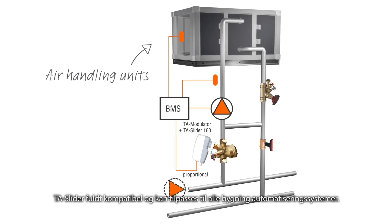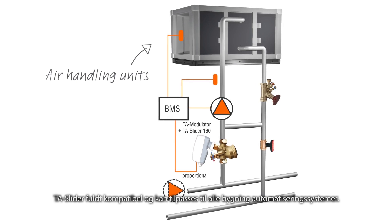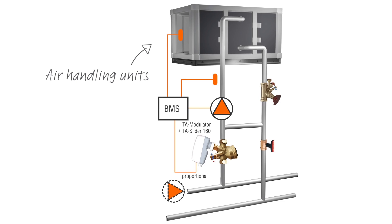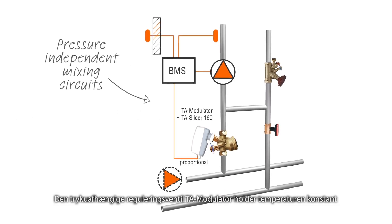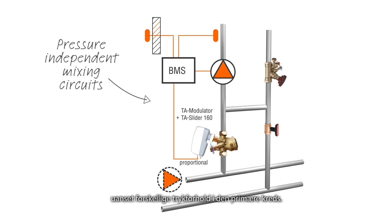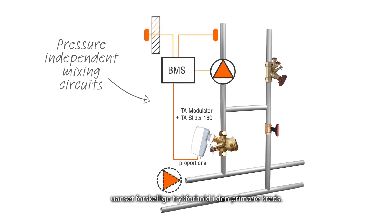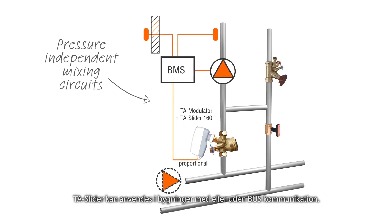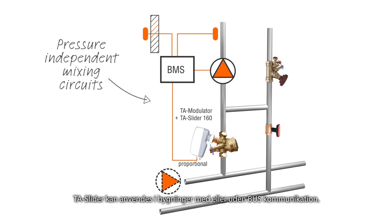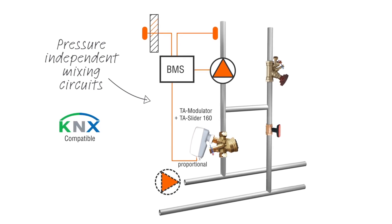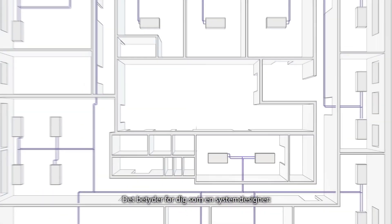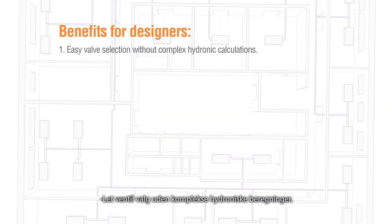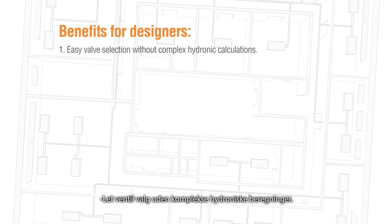TA slider is fully compatible and adaptable to all building automation systems. The pressure independent TA modulator keeps the temperature constant regardless of different pressure conditions in the primary circuit. TA slider can be used in buildings with or without bus communication. For you as a designer, this means easy valve selection without complex hydronic calculations.